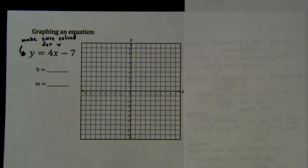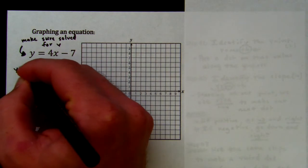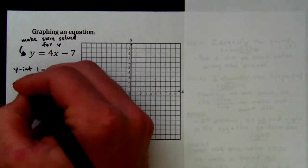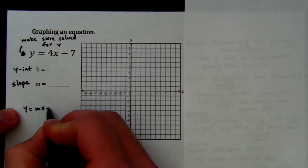So we need to identify two things first. We need to identify our y-intercept and our slope, and remember that b is y-intercept and slope is m. Now here's our slope-intercept form, y equals mx plus b.